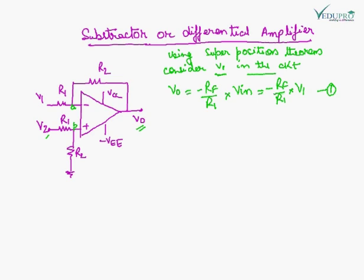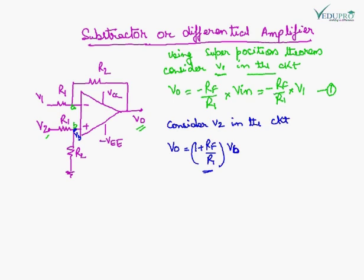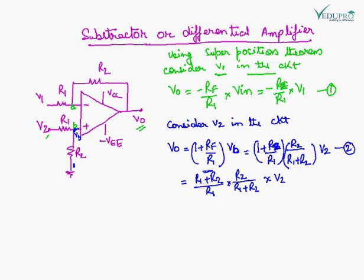Now we will consider V2 in the circuit with no V1. When only V2 is present, this circuit is a non-inverting amplifier. The non-inverting amplifier output will be (1 plus RF upon R1) — the gain — multiplied by VB, the voltage at that point. VB will be the voltage drop across R2. Since RF equals R2, we replace RF by R2, giving (R1 plus R2) upon R1, into R2 upon (R1 plus R2), into V2. This is equation 3.